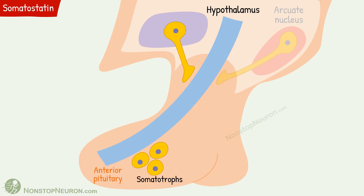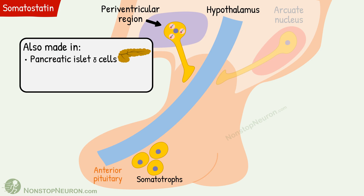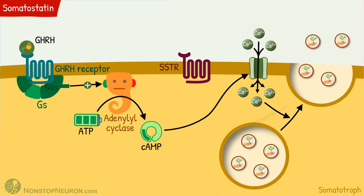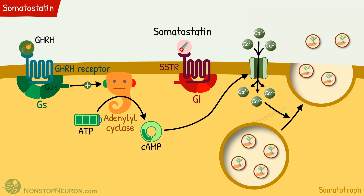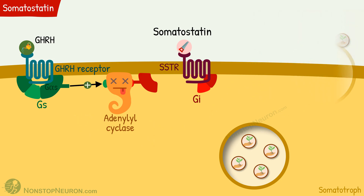Next is somatostatin. It is mainly synthesized in the periventricular cells of the hypothalamus, but is also made in pancreatic islet delta cells and D cells in the GI tract. From the periventricular region, somatostatin is secreted into the long portal veins and goes to the somatotrophs. Here it binds with G protein coupled receptors called SSTR. In contrast to GHRH receptors which are Gs-coupled, SSTR is coupled to Gi protein, which inhibits adenylyl cyclase. As a result, all subsequent steps are prevented and growth hormone release decreases. Thus, somatostatin inhibits release of growth hormone by somatotrophs.